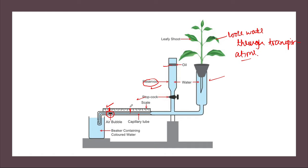After five minutes we open the reservoir and get the air bubble back. If you leave it for another five minutes, transpiration will occur again and we will see the air bubble move. The movement of the air bubble — the to and fro — gives us the measurement of the amount of transpiration happening. For example, if the bubble is at 2 cm and after five minutes it moves to 4 cm, we open the stopcock to let the reservoir push more water in.